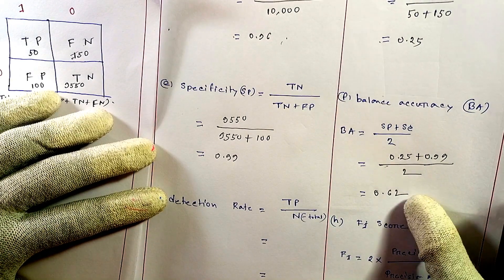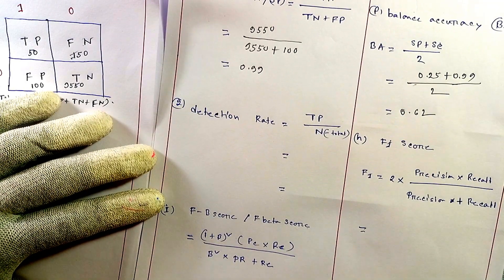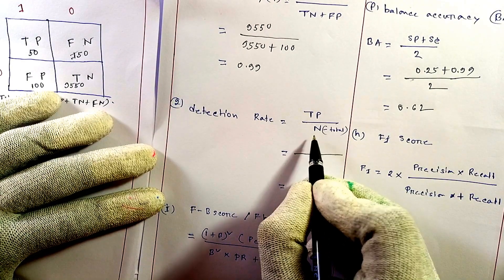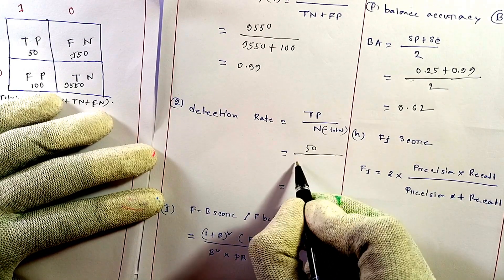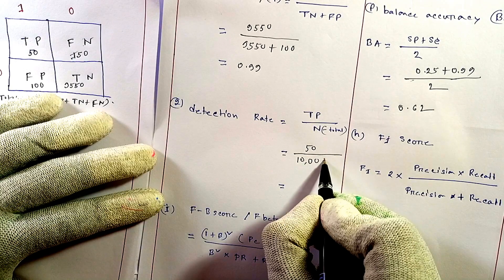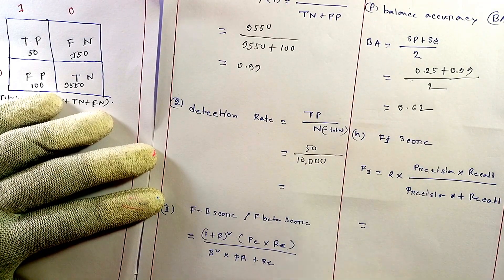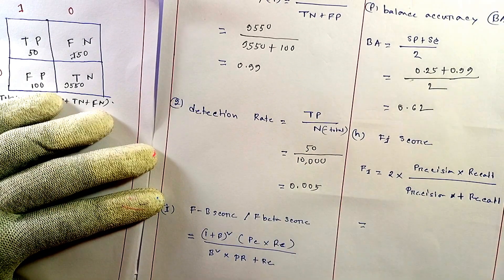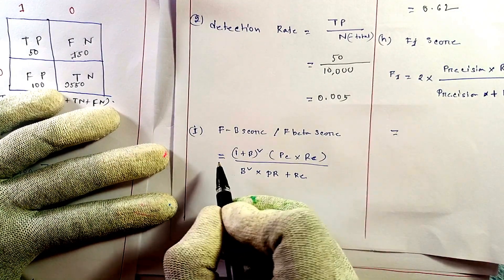Balanced accuracy will be different from a regular classifier accuracy. Next is detection rate: detection rate equals TP divided by N, where N is the total. TP equals 50 and total is 10,000, so our detection rate will be 0.005.